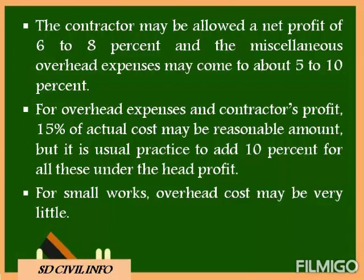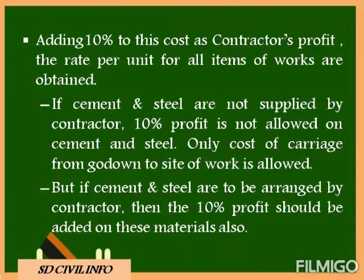In addition, a reasonable profit for the contractor is also included in the analysis of rates. The contractor may be allowed a net profit of six to eight percent, and miscellaneous overhead expenses may come to about five to ten percent. Therefore, totally for overhead expenses and contractor's profit, fifteen percent of actual cost may be a reasonable amount, but it is usual practice to add ten percent for all these works under the head 'profit.' For smaller works, the overhead cost may be very little.